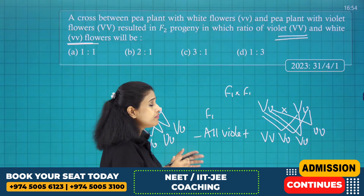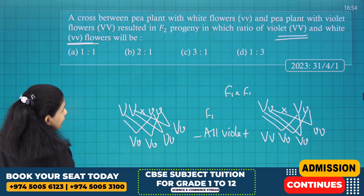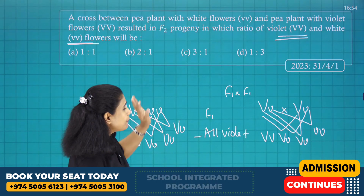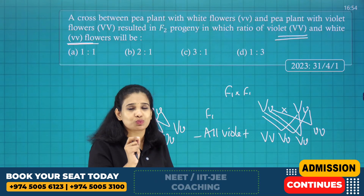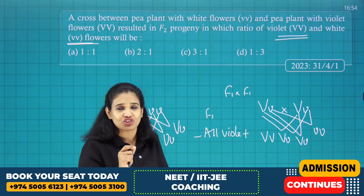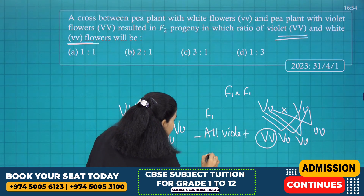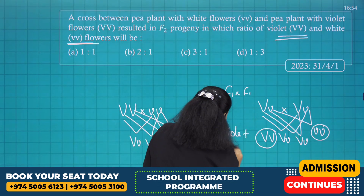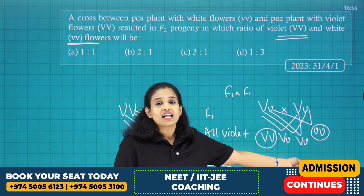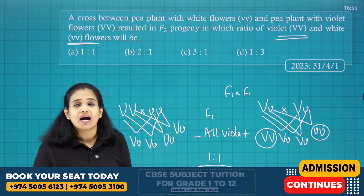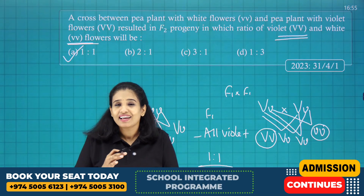But the question asks for the ratio of pure (homozygous) violet to homozygous white in F2. From the F2 progeny VV, Vv, Vv, vv — there is one homozygous violet (VV) and one homozygous white (vv). So homozygous violet to homozygous white is in the ratio 1:1. The correct answer is option A, which is 1:2:1 — meaning the homozygous to heterozygous to homozygous ratio confirms the answer.